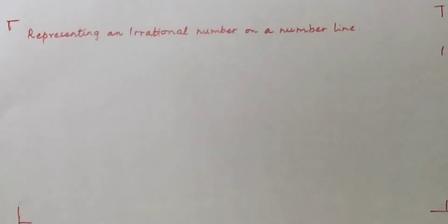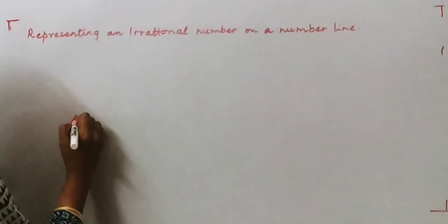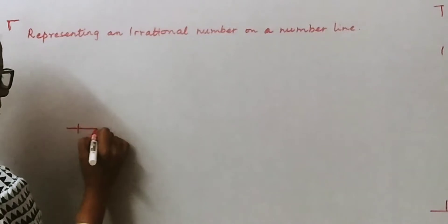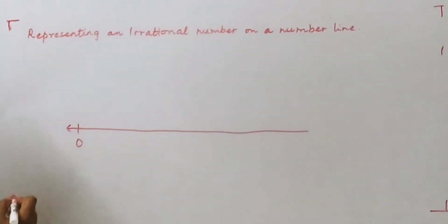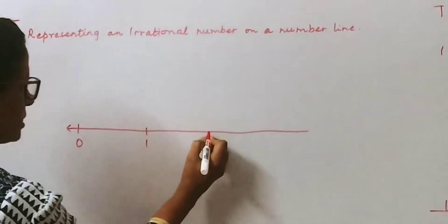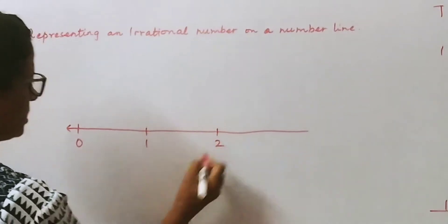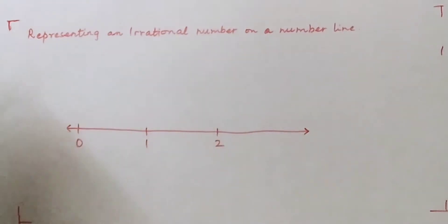Good morning, welcome to ICAC standard line and maths. Today we are doing the topic representing an irrational number on a number line. For this we have to start with a number line which we will mark at zero. We will take approximately 3 centimeters to call this as one unit, and the same distance out here as the second unit, extending on either side.